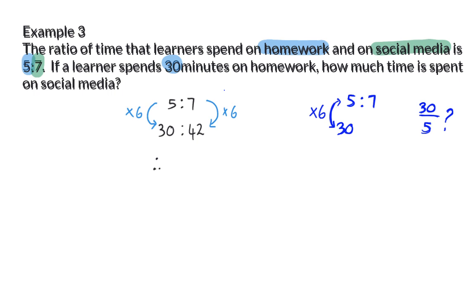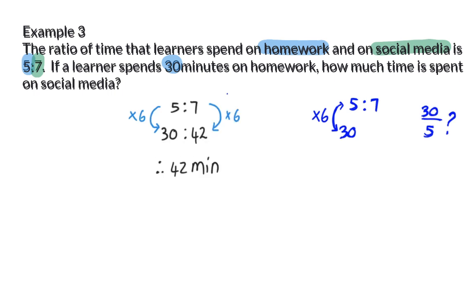Therefore, we can say that 42 minutes will be spent on social media. It is important to be able to write down your thought process in a meaningful mathematical way. Here, we started off with the actual minutes used for homework, and we divided it by the simplified value for homework in the ratio. This gave us the value 6, and we multiplied it with the simplified value for social media in our ratio, to end up with 42 minutes. This is a logical way to write down your steps.